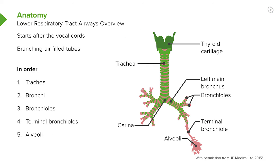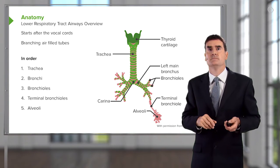This starts with the trachea, which is a tube that runs from the larynx down to the division at the carina into the right and the left main bronchi. The order of the airways are trachea, bronchi, these divide into bronchioles, terminal bronchioles, finally reaching the alveoli at the very bottom, at the very distal end of the lung.